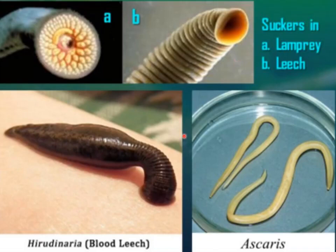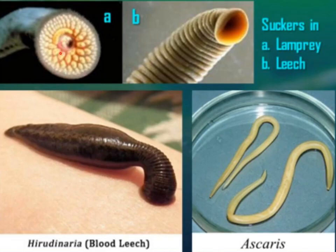Here you can see different parasites: Hirudinaria (blood leech), Ascaris (female and male), and in this diagram you can see suckers in lamprey used to attach with and feed on the host. Suckers are present in lamprey and leech to feed on host.